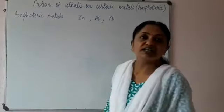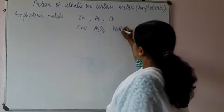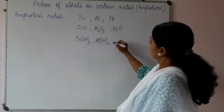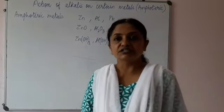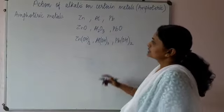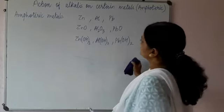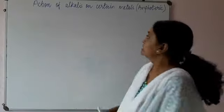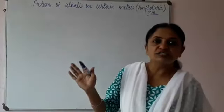When talking about zinc, aluminium, and lead, their oxides — zinc oxide, aluminium oxide, and lead oxide — and their hydroxides — zinc hydroxide, aluminium hydroxide, and lead hydroxide — are all amphoteric in nature. When these react with alkalis, we will study the products formed. There are 9 reactions to understand, all very important. To remember amphoteric metals, remember ZAL: Zinc, Aluminium, Lead.